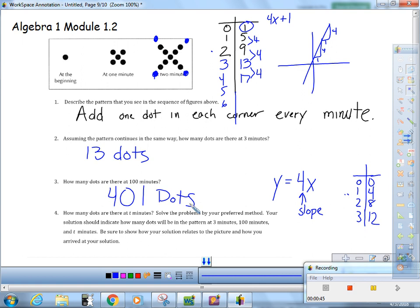How many dots are there after t minutes? Solve it by your preferred method. Well, let's try this: y equals 4t plus one. All right, let's check it. Put in a zero you get a one. Put in 3 and you get a 13. Put in a hundred and you get 401. Love it.